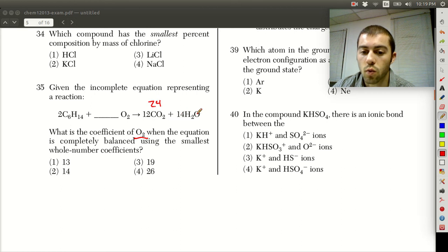Here we have 14 water molecules. Each water molecule has one oxygen atom, so that makes a total of 14 oxygen atoms. And if we add this up, this gives us a total of 38 oxygen atoms on the right side of the equation. So we need 38 total on this side of the equation as well. So to find out this coefficient, we need 38 total. There's two molecules in each,